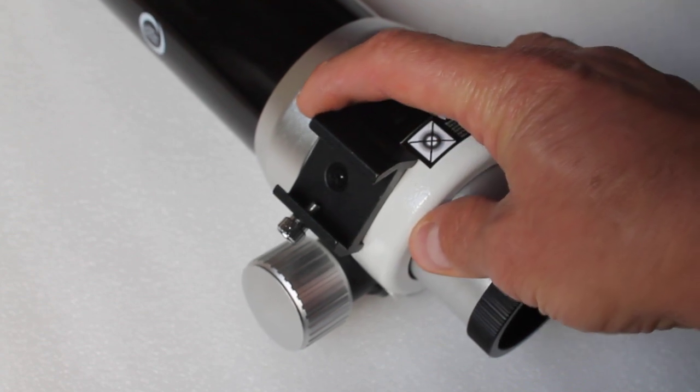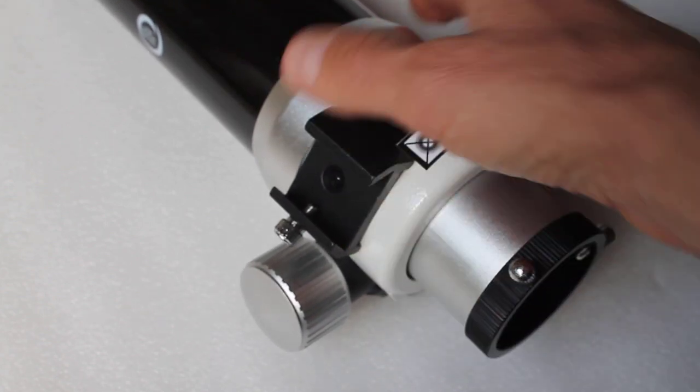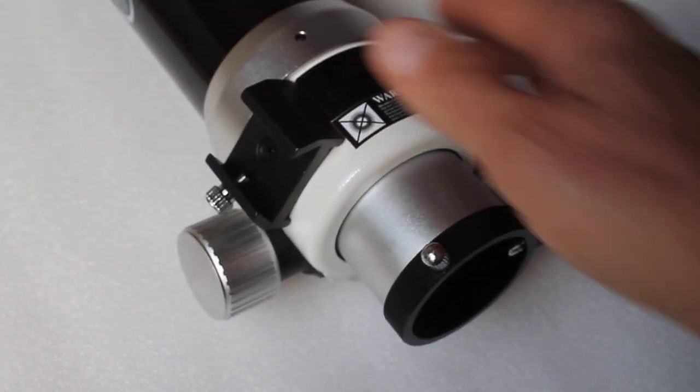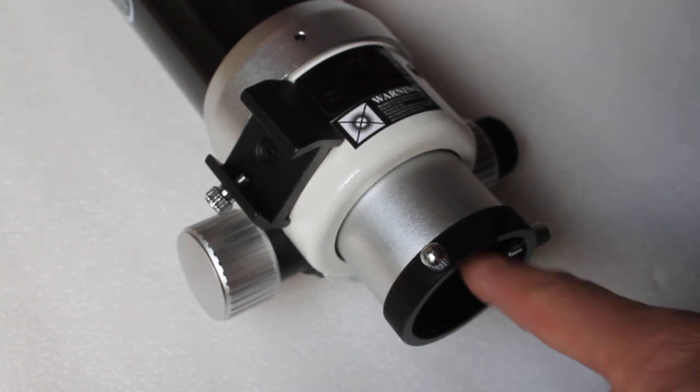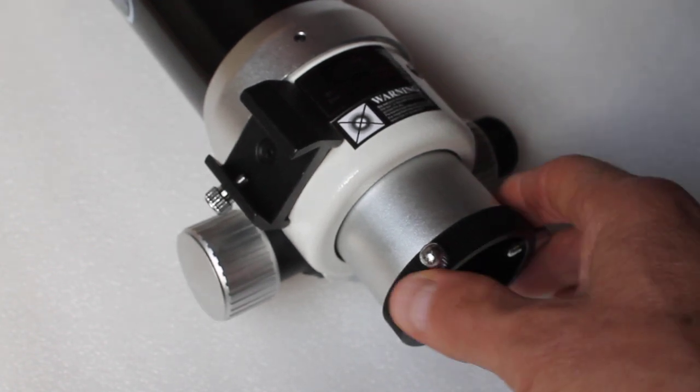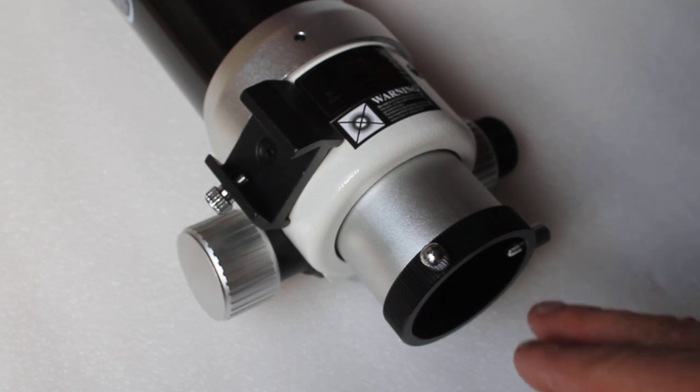It has a connection for a hot shoe finder there. The finder scope is not included, and you get no star diagonal or eyepiece. It does accept 2-inch diagonals, but you can also buy additional adapters that stop down to 1.25 inch, though I'm not sure why you'd want to do that.